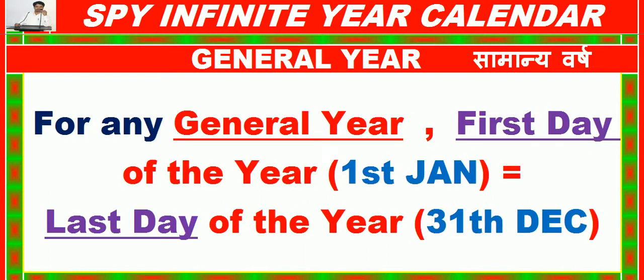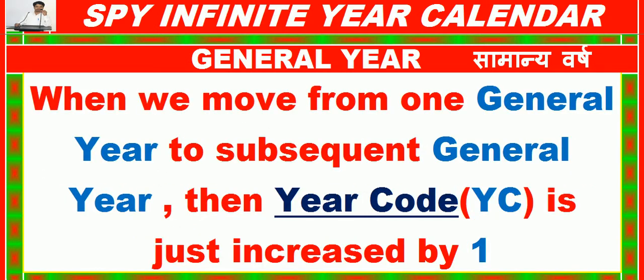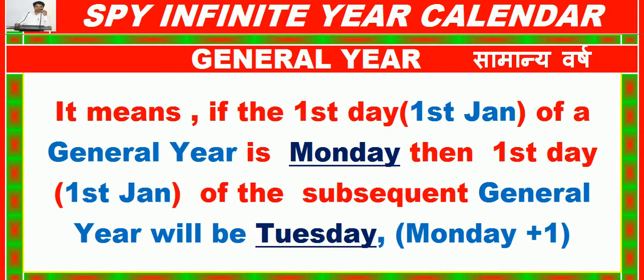For any general year, the first day of the year (1st January) equals the last day of the year (31st December). It means if 1st January of a general year is Monday, then 31st December of the same general year will always be Monday. When moving from one general year to the subsequent general year, the year code (YC) increases by 1. So if 1st January of a general year is Monday, then 1st January of the subsequent general year will be Tuesday (Monday + 1).